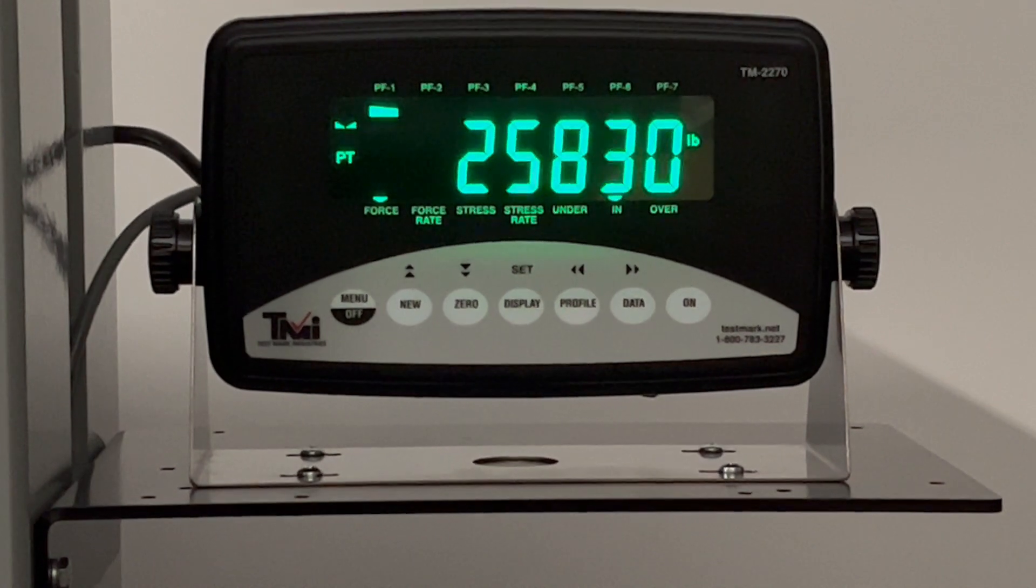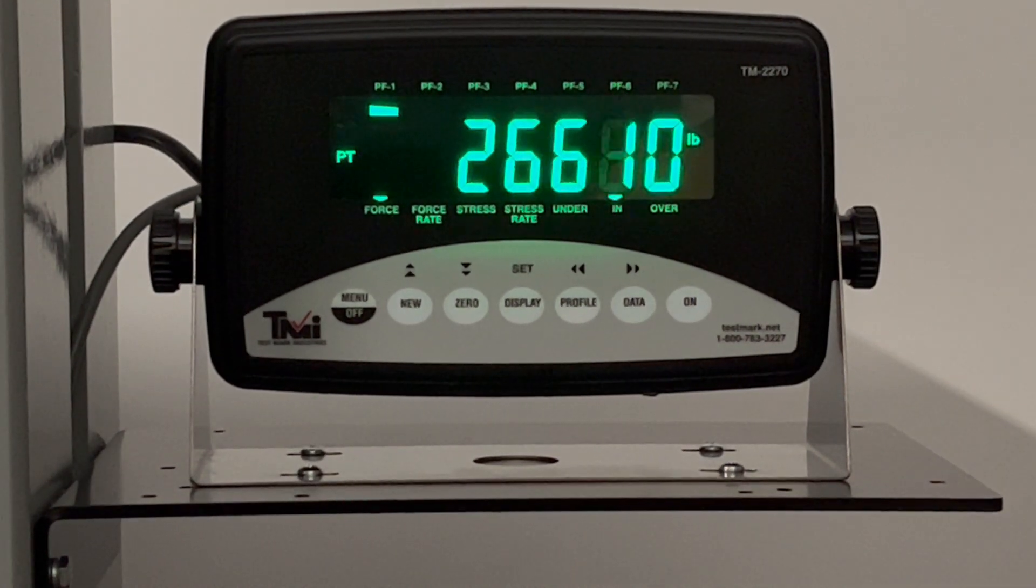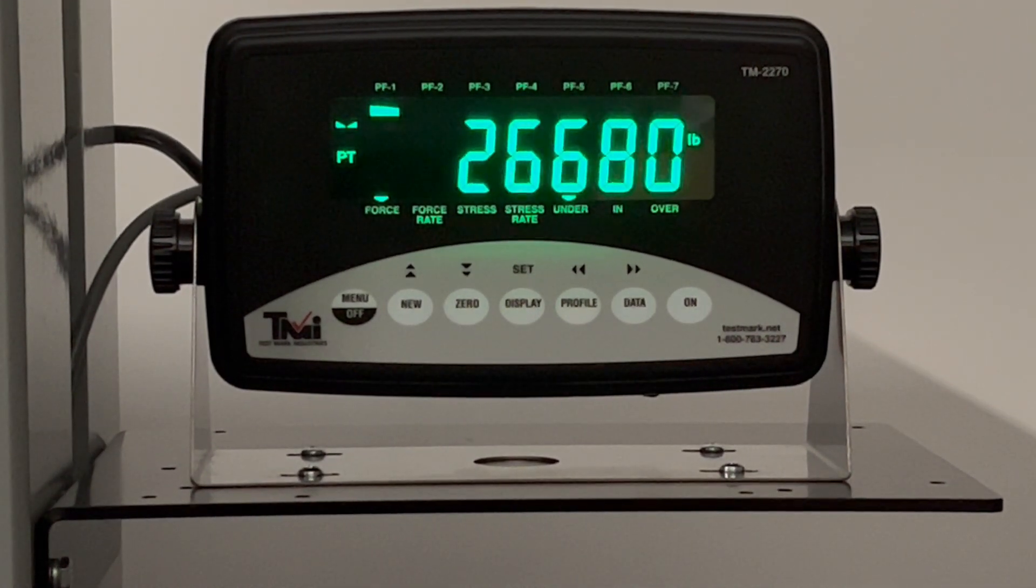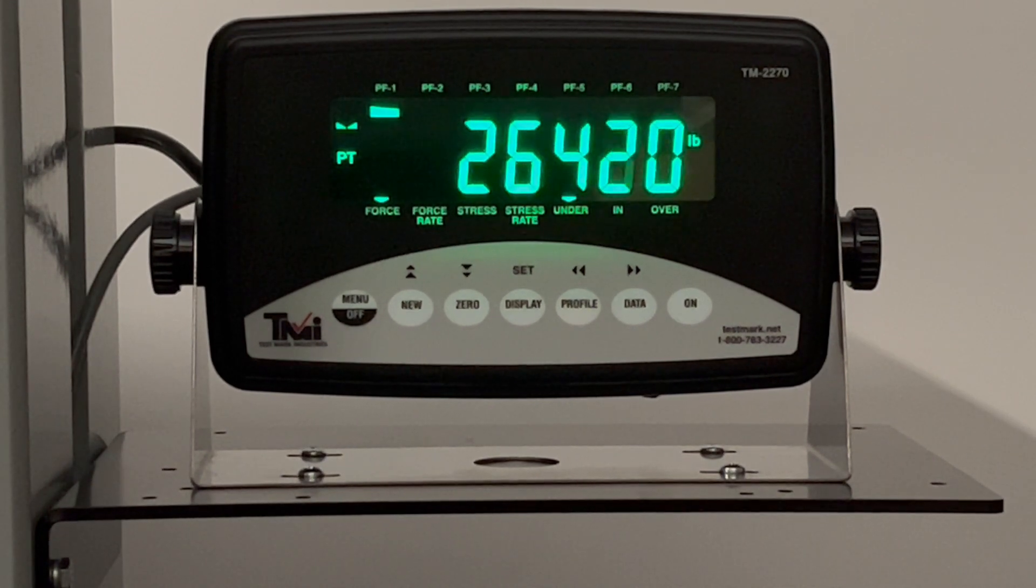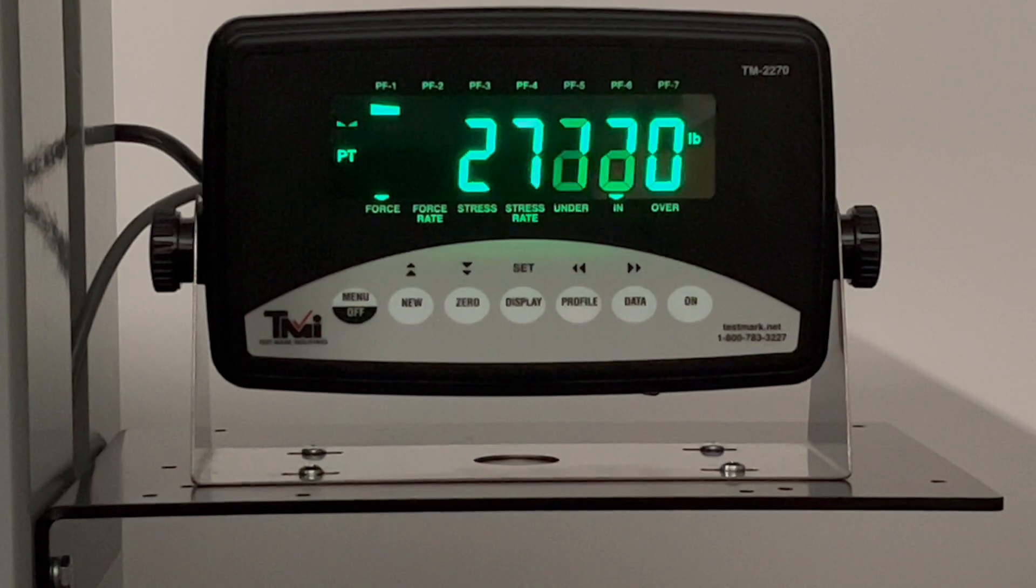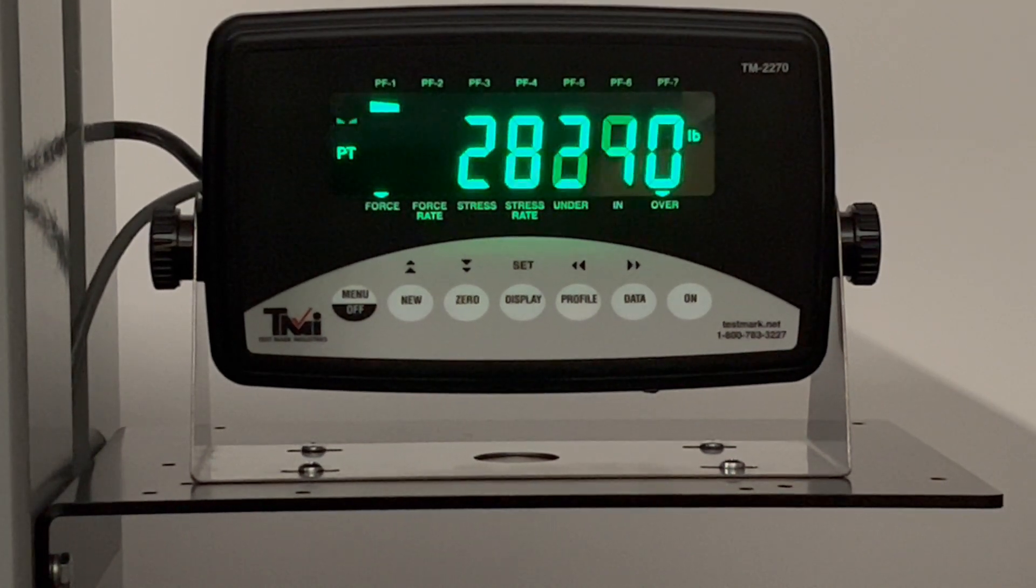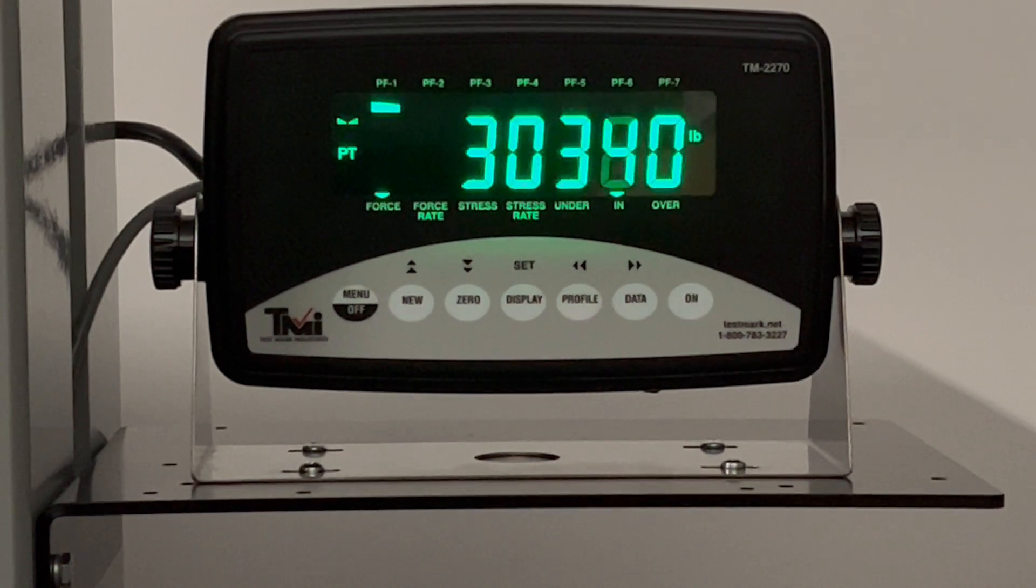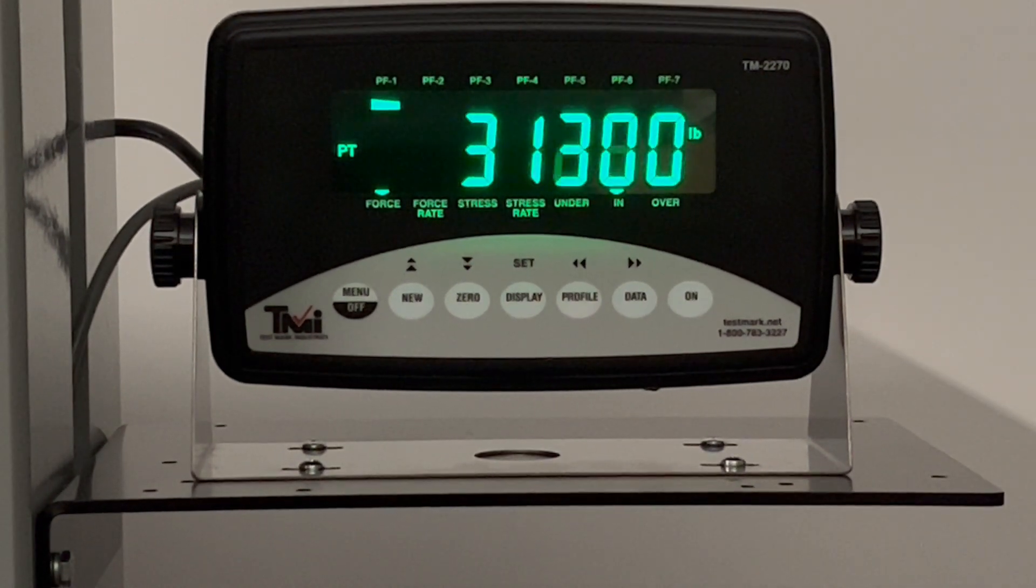I will now slow down the test and speed it back up to demonstrate. So I'm above the under, and now it is running too fast, and it is above the over. At the correct speed, it is above the in.